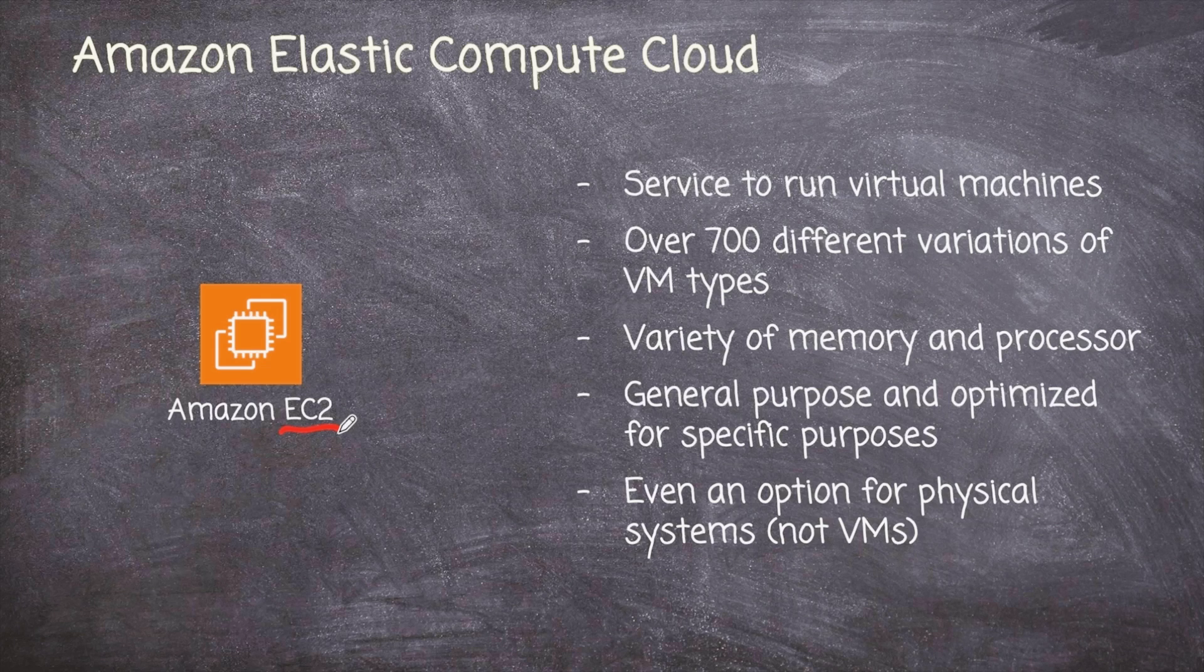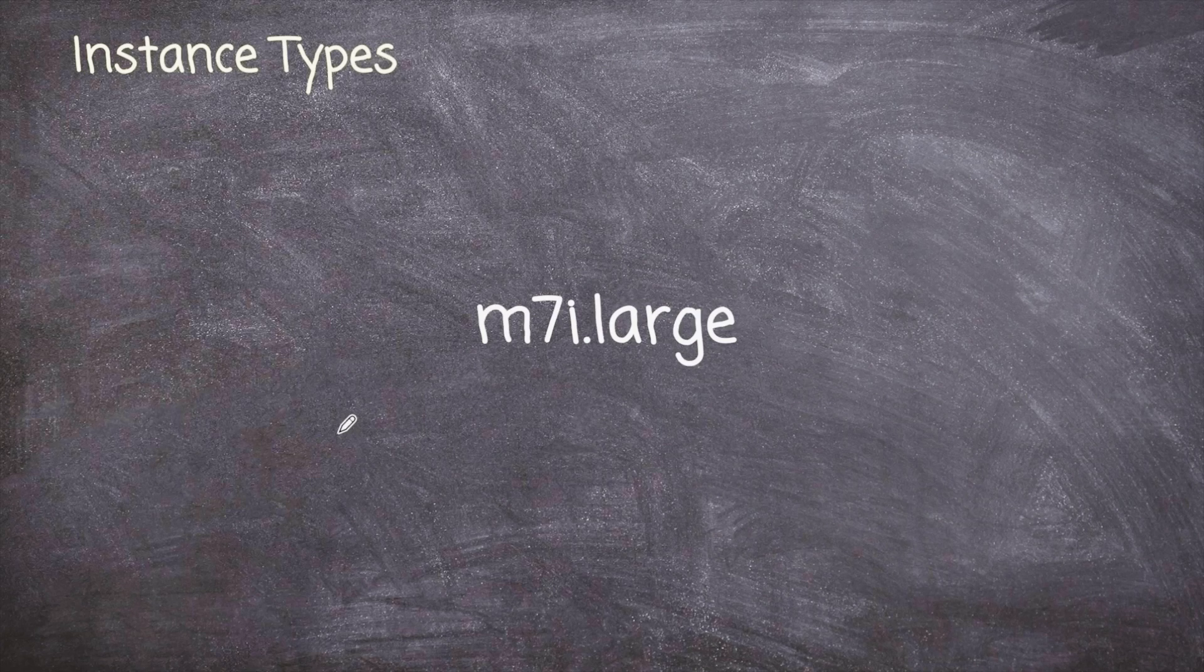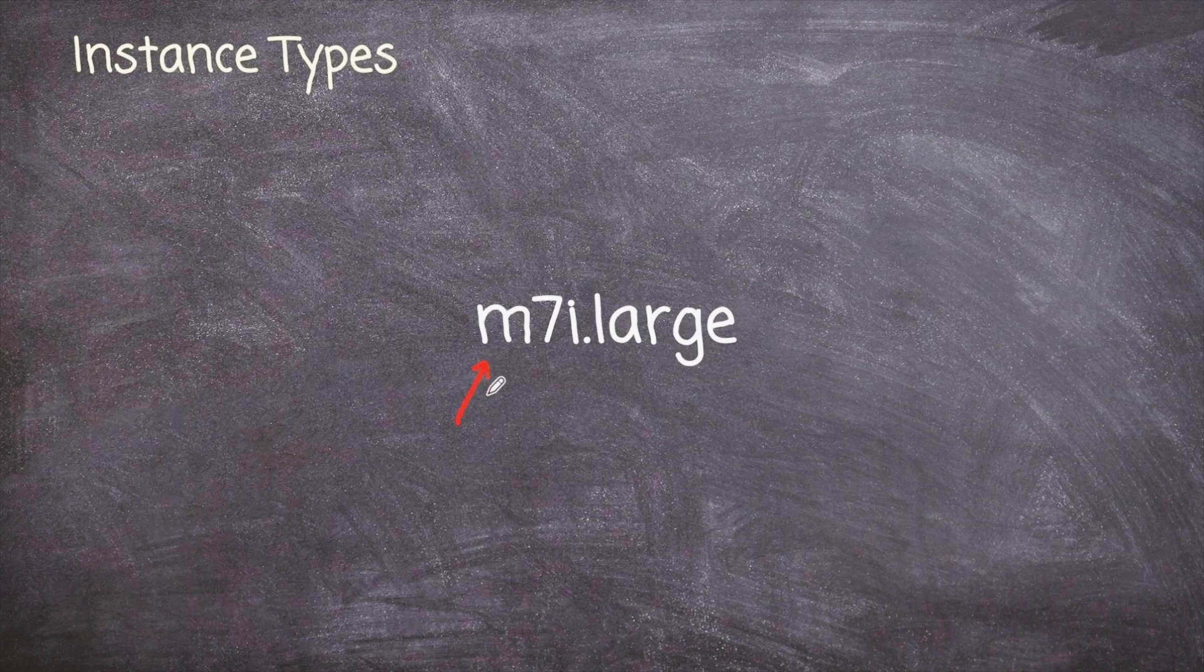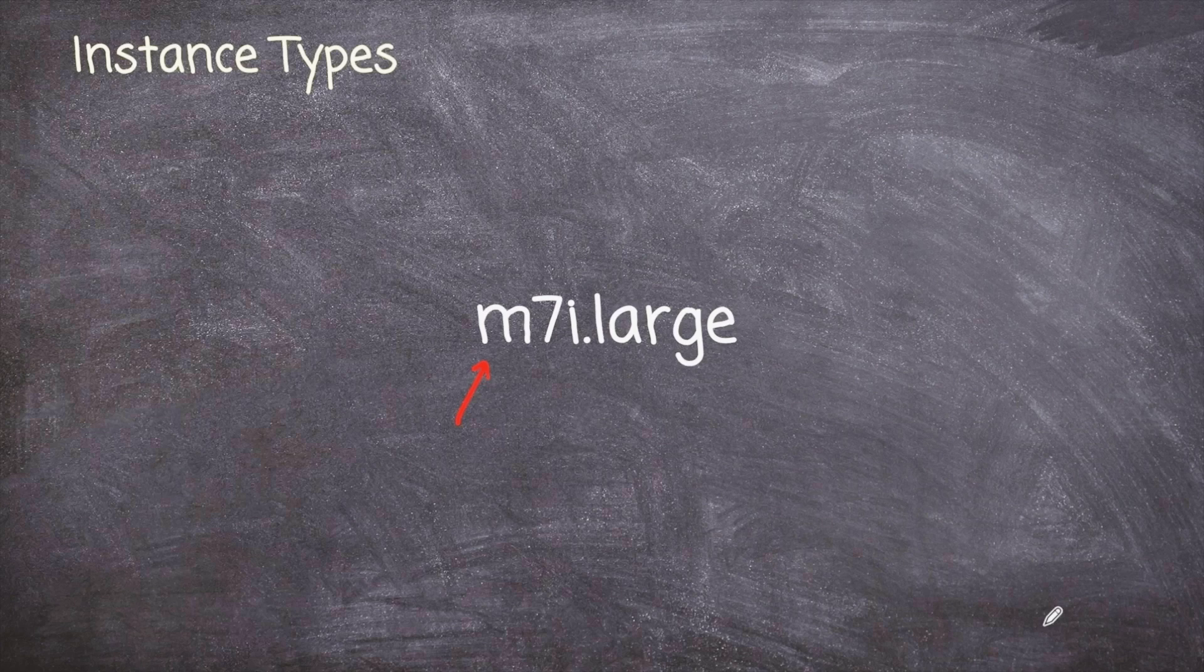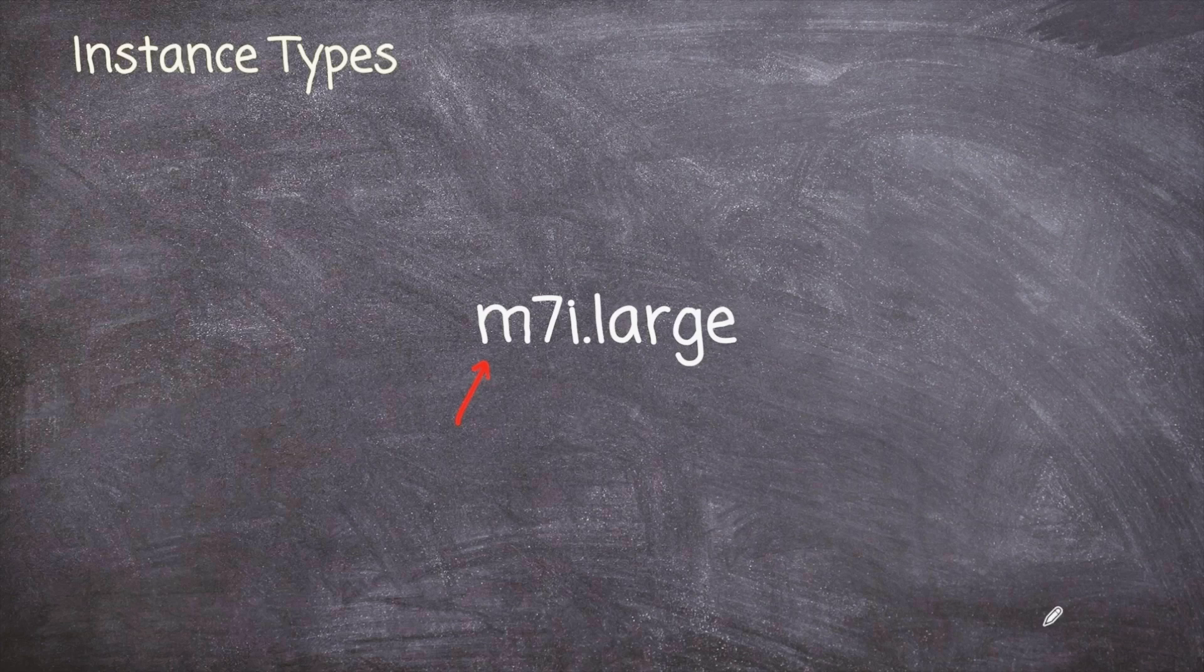Now, when we're talking about different VM types, we really need to spend a little bit of time on the naming. So this is the name of one such VM type, one of those 700 different types. And let's deconstruct what we're seeing here. So first, this M, to me, I immediately recognize that because I know the instance type naming structure. And M means general purpose. I know it's not very intuitive in this case, but just bear with me here.